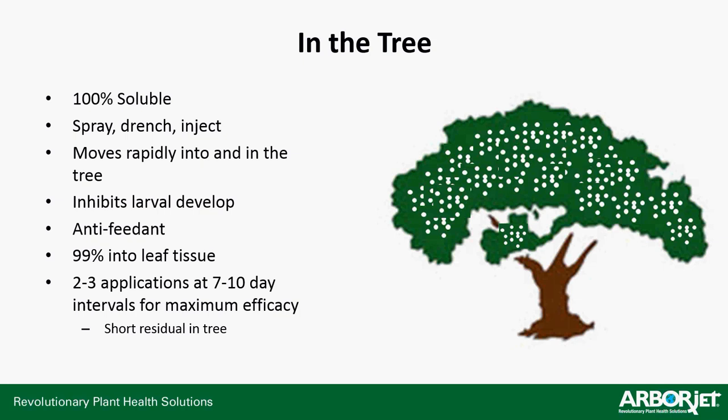In the tree, it's 100% soluble. It dissolves very easily and very rapidly in water. You can spray it, drench it, or inject it — whether you do a bark drench, a soil drench, spray it into the canopy, or inject it directly into the vascular tissue. It's going to move rapidly into the tree, inhibit larval development, and work as the antifeedant. About 99% of this product ends up in the leaf tissue because it is so soluble — it gets up into the leaf tissue where it's going to do its job and stay there. The one drawback with azadirachtin is that it breaks down quite quickly, so to get a couple months' worth of control you need to do two to three applications at about a 10-day interval.